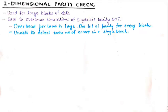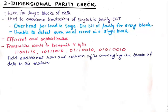The overhead per payload is very large in single bit parity — one bit of parity is sent along with the block, so that is a huge overhead per payload. And it is unable to detect even numbers of errors as mentioned earlier. Now two dimensional parity check is efficient and sophisticated. Let's say we wish to transmit four bytes.